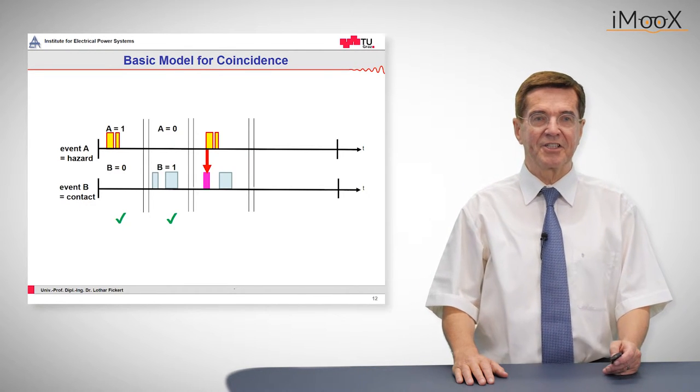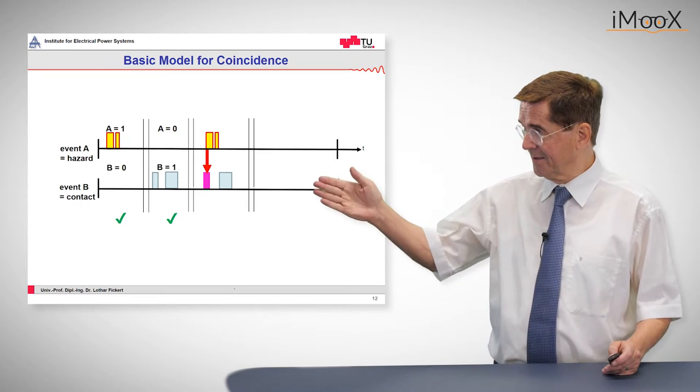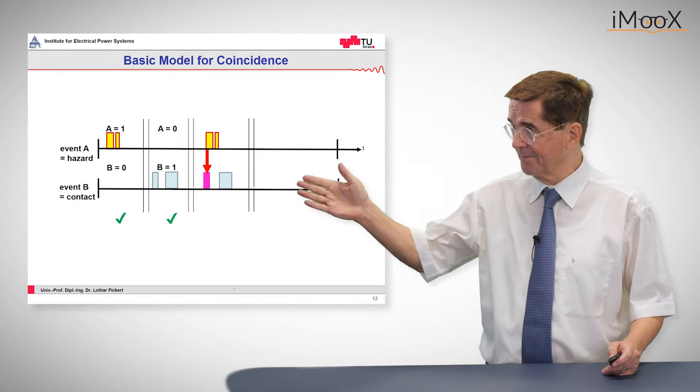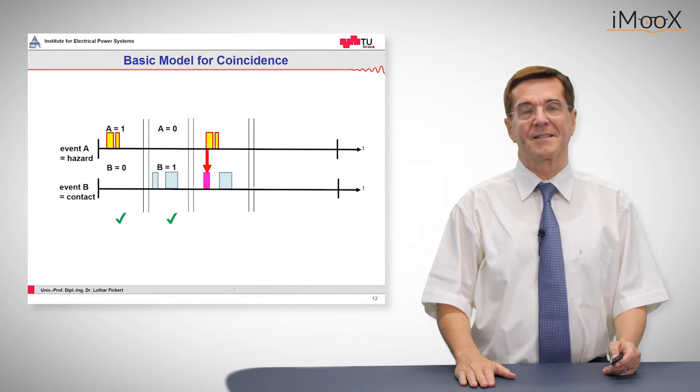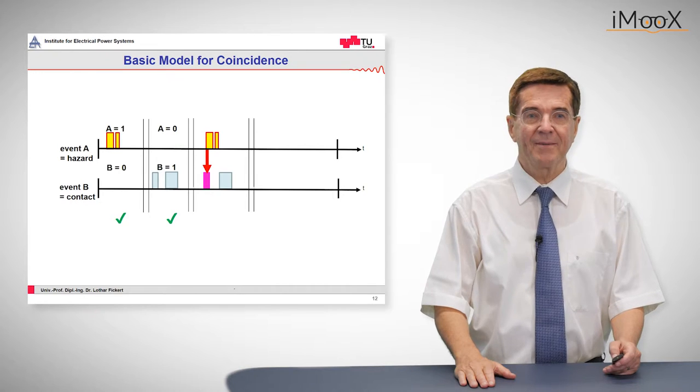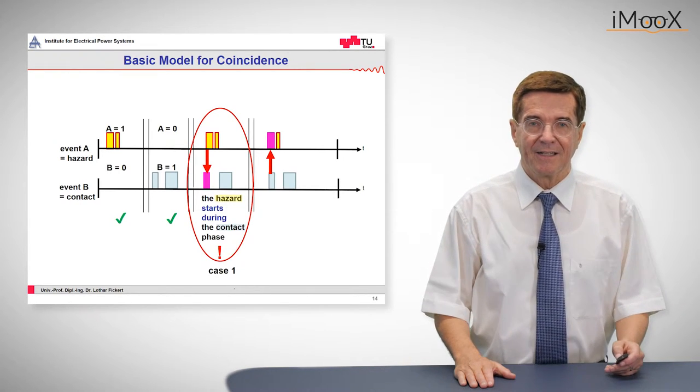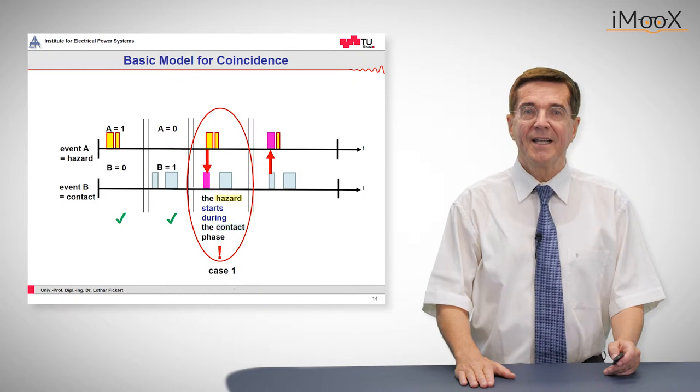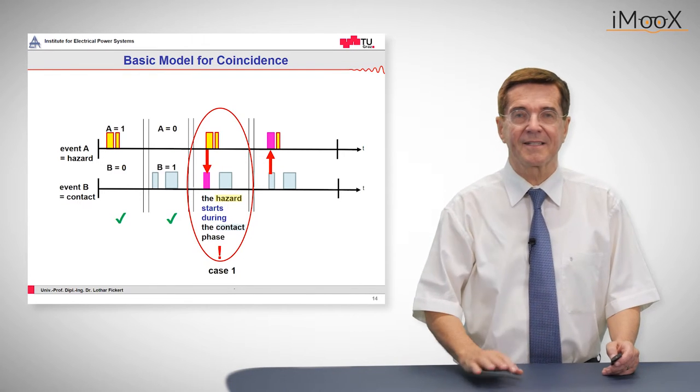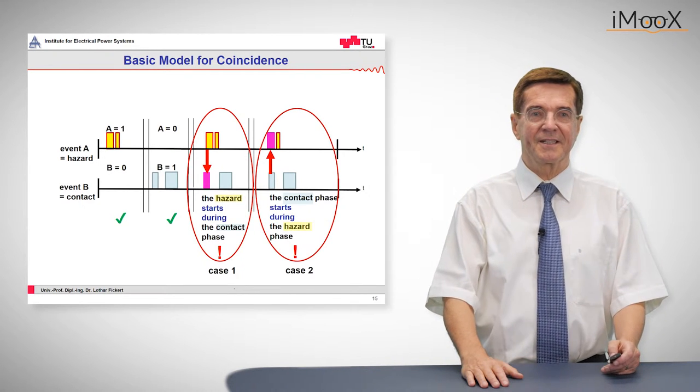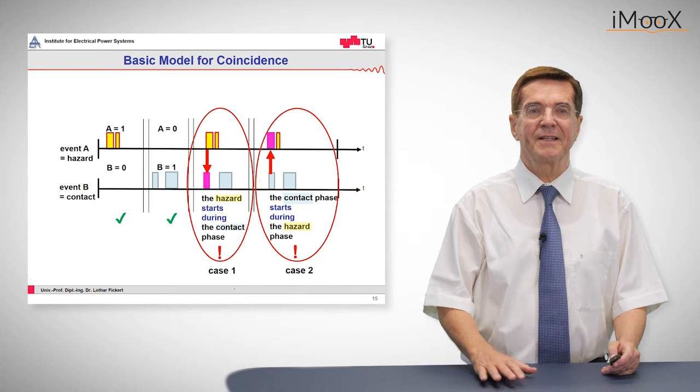But now we can have the situation that while the person is present, you see this red rectangular, then the event A, the hazard sets in and that means something will happen. The same occurs if we have a hazard situation existing and a person coming into it. So this is the person enters this hazard situation, we call this the case B, that means the contact phase starts during the hazard phase.